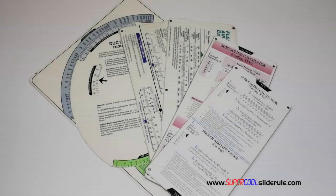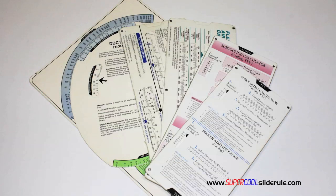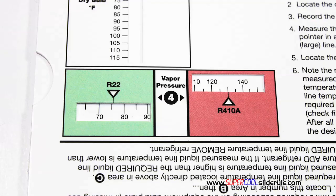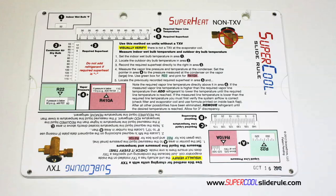Historically, technicians have carried four or five different slide rules — one for R22, one for R410A, one for metal duct sizing, one for flexible duct sizing, and yet others for diagnostics or troubleshooting. Thankfully, those days are gone. This one tool will allow you to charge a system with R22 or R410A in either the superheat or subcooling method.